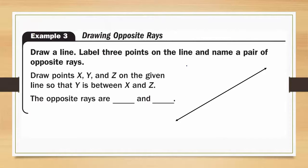Example three, drawing opposite rays. Draw a line, label three points on the line, and name a pair of opposite rays. First we have to draw points X, Y, and Z on the given line so that Y is between X and Z. So here's Y and it is between X and Z.